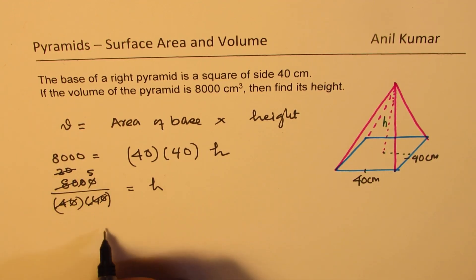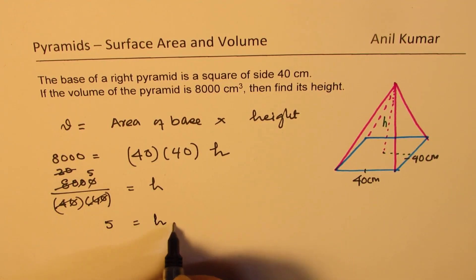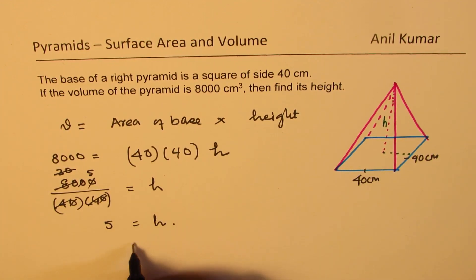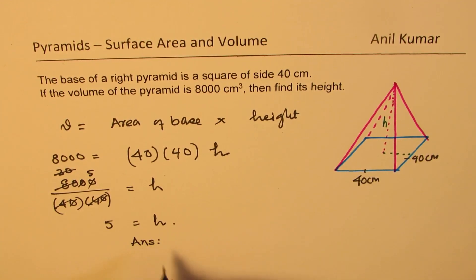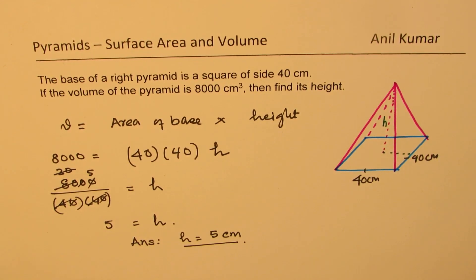So we get 5 equals to height. So height of this pyramid is 5. Height is equal to 5, and the units are centimeters. Is that clear?